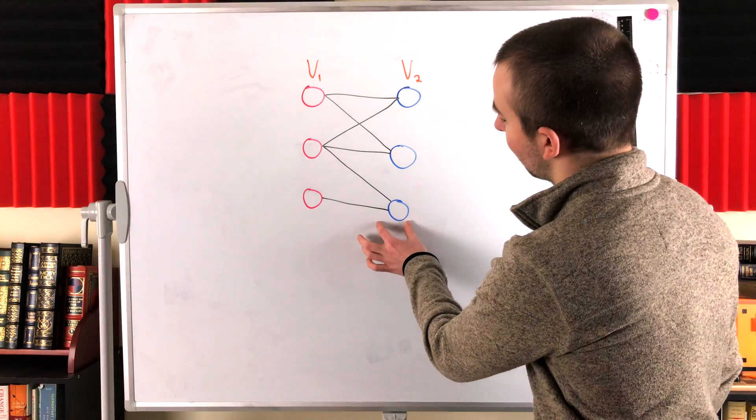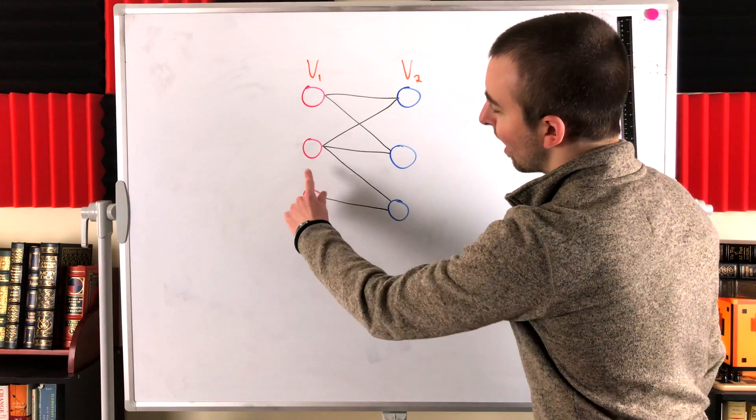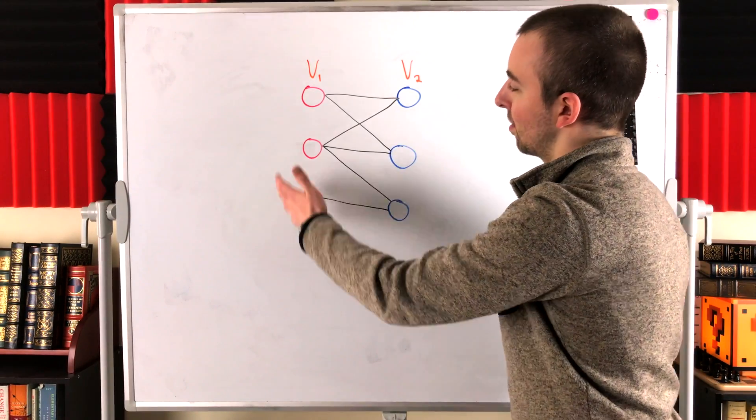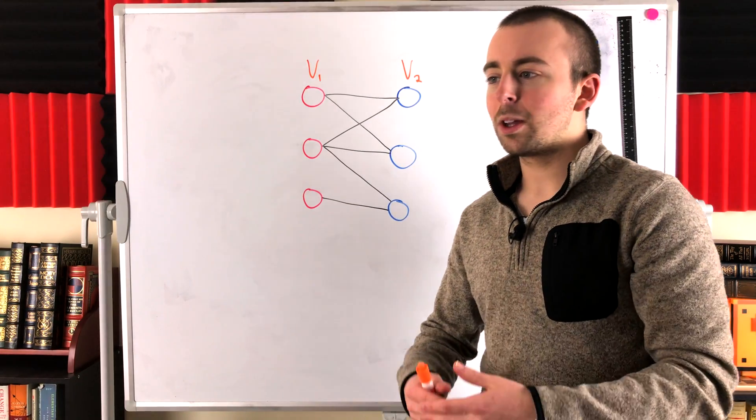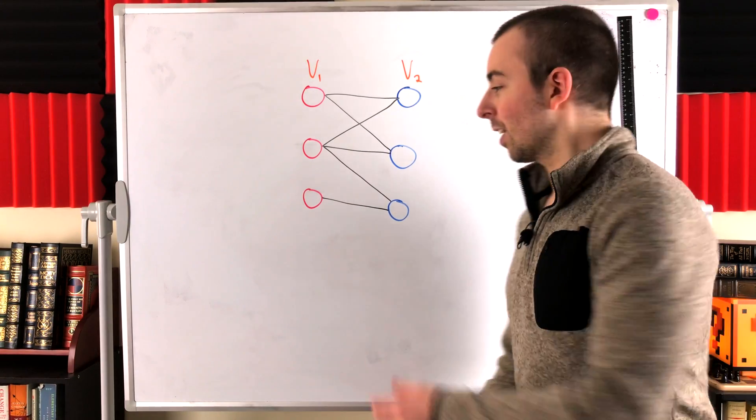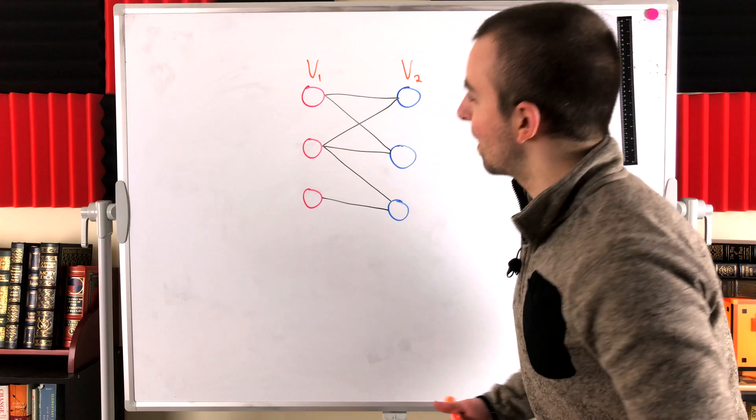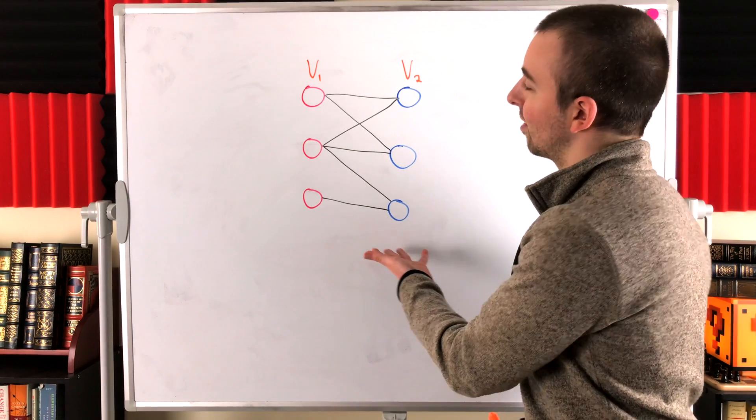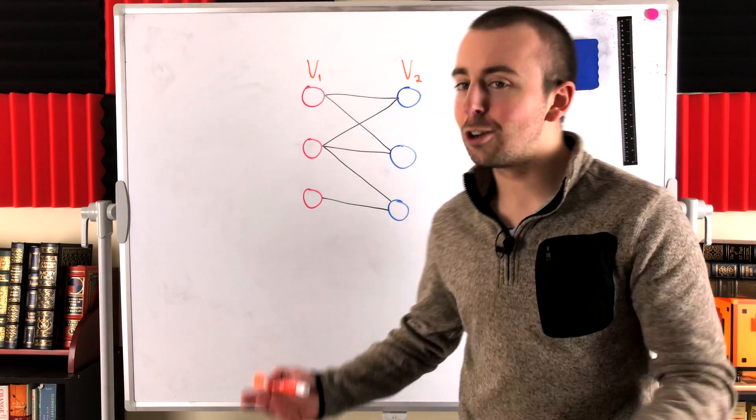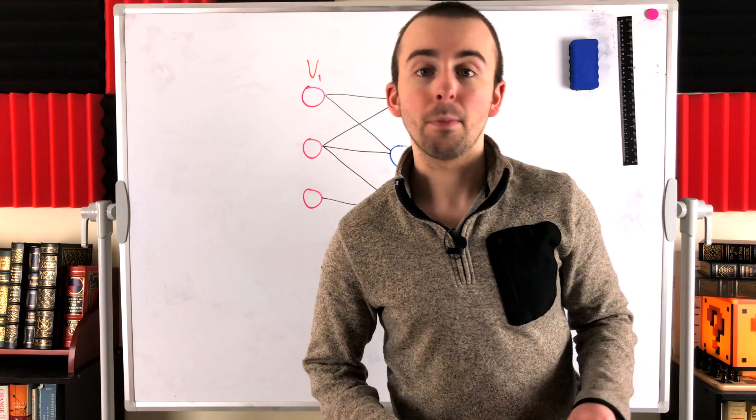We can't take this vertex and move it over here because it's got neighbors. So then it would have neighbors in the same partite set as it, which wouldn't be a bipartite partitioning. I mean, we could draw it there and that wouldn't change the fact that this is still a bipartite graph. We just wouldn't be looking at a bipartite partitioning.